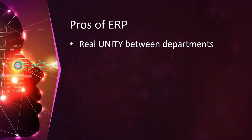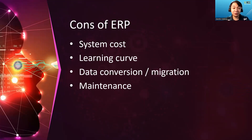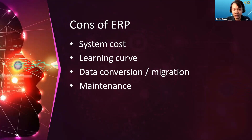As for the disadvantages of ERP: first is the system cost. Transitioning to an ERP system is not cheap and will incur additional expenses for the company. Second is the learning curve — it refers to the training and adjustment period for staff, managers, and employees who will use the system. Third, and perhaps one of the hardest parts of transitioning to ERP, is the conversion and migration.